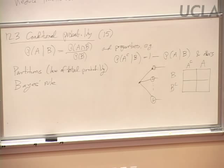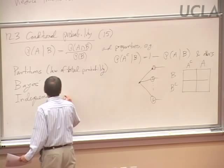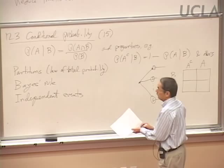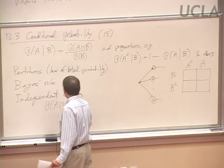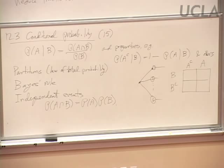With Bayes' rule, typically we want to turn some conditional probability around — given that the person actually tested positive, what's the probability that he did have the disease? We also talked about the important idea of independent events: when the probability of the intersection factors as a product of the individual event probabilities. The idea of independent events has come up a lot since.